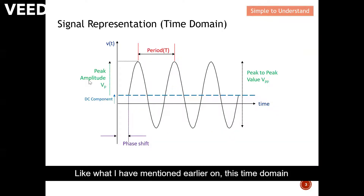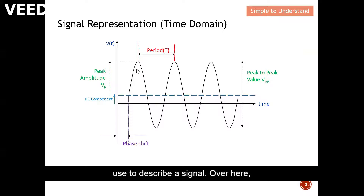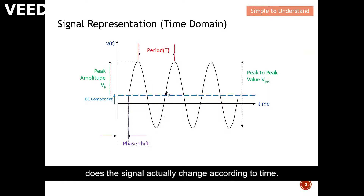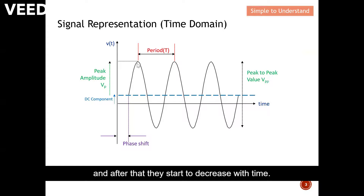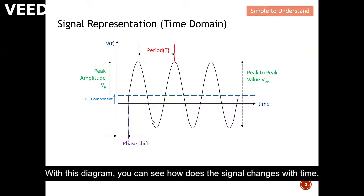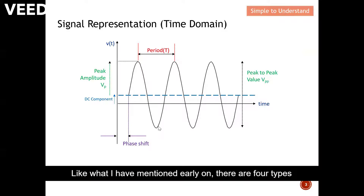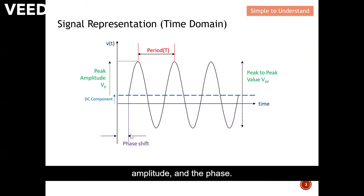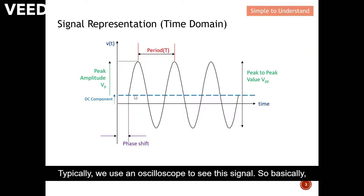The time domain is one of the most popular ways to describe a signal. In the time domain, you can see how the signal changes over time. For example, with a sine wave, the signal increases then decreases with time. There are four key parameters: DC, peak voltage, amplitude, and phase. Typically we use an oscilloscope to see this signal, which measures time versus voltage, current, or power.